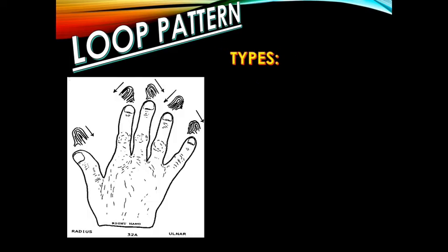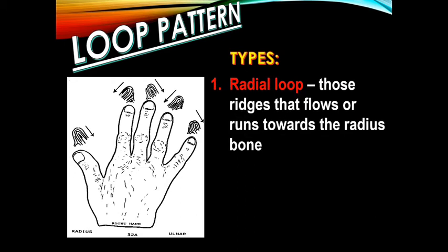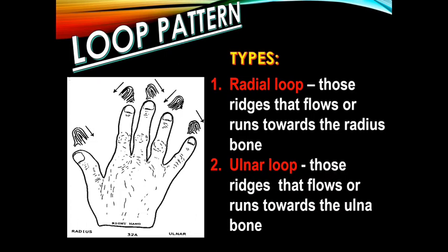Let us now proceed with the different types of loop pattern. First, we have the radial loop wherein the ridge flows or runs towards the radius bone or the thumb. Second, we have the ulnar loop wherein the ridge tends to flow or runs towards the ulnar bone or the little finger. In this first example, the ridge tends to go or runs towards the ulnar bone, so this is considered as an ulnar loop. These examples are taken from the right hand.